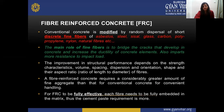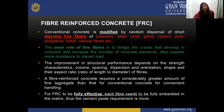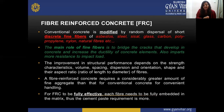Fiber reinforced concrete is quite an important type and was a relatively recent invention. Conventional concrete is modified by random dispersal of short discrete fine fibers of asbestos, steel, sisal, glass, carbon, polypropylene, nylon, and natural fibers such as jute. Any discrete fine fibers are thoroughly mixed inside the concrete and that concrete base is used for construction of molds.